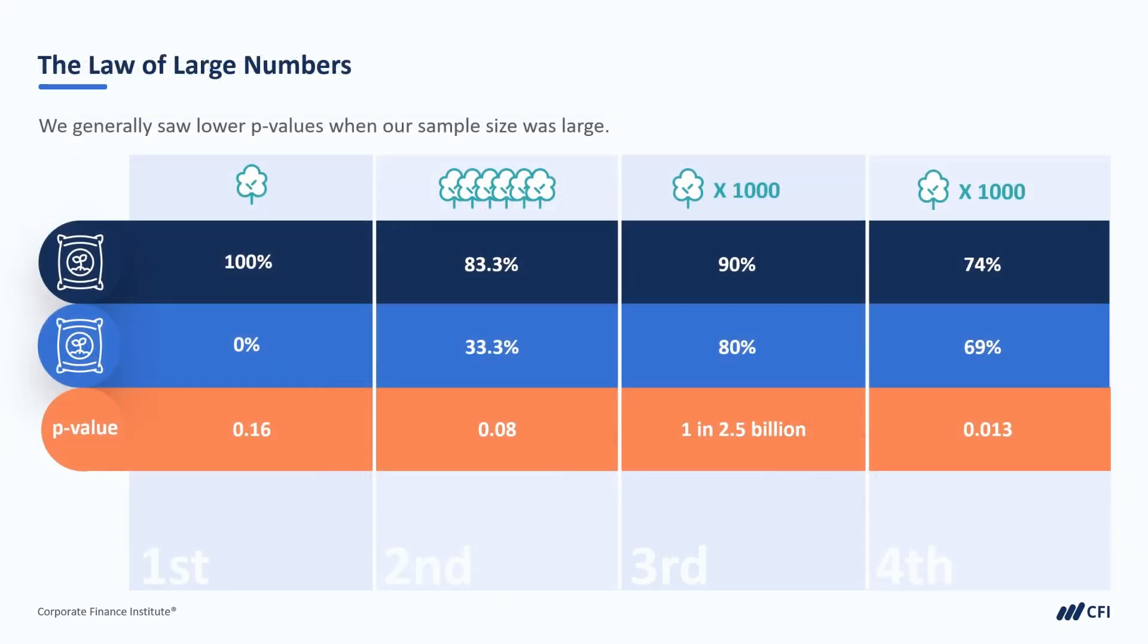Earlier in the chapter, we reviewed the p-values of the four experiments that we ran on our tree saplings using different fertilizers. One thing that you may have noticed is that we generally saw smaller p-values when we used larger samples. To further explore this idea, let's take a look at the following tests. In each test, there is a 10-point difference between our two groups. However, as our sample size increases, our p-value decreases.